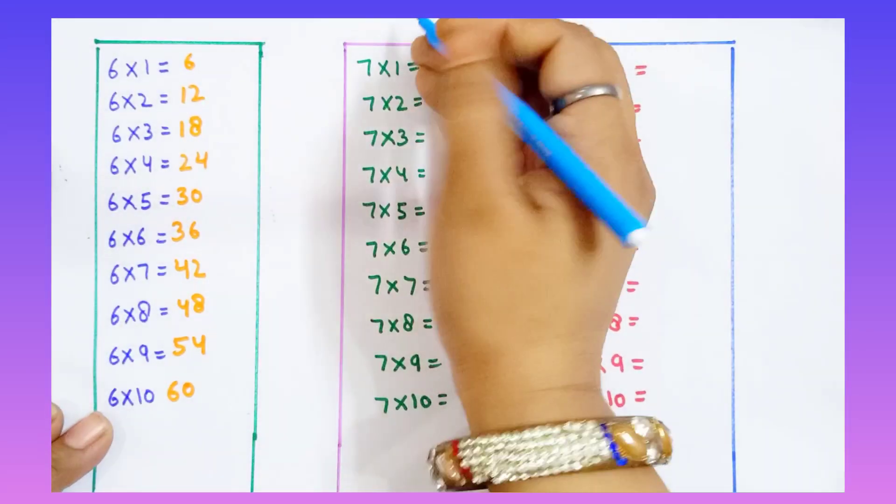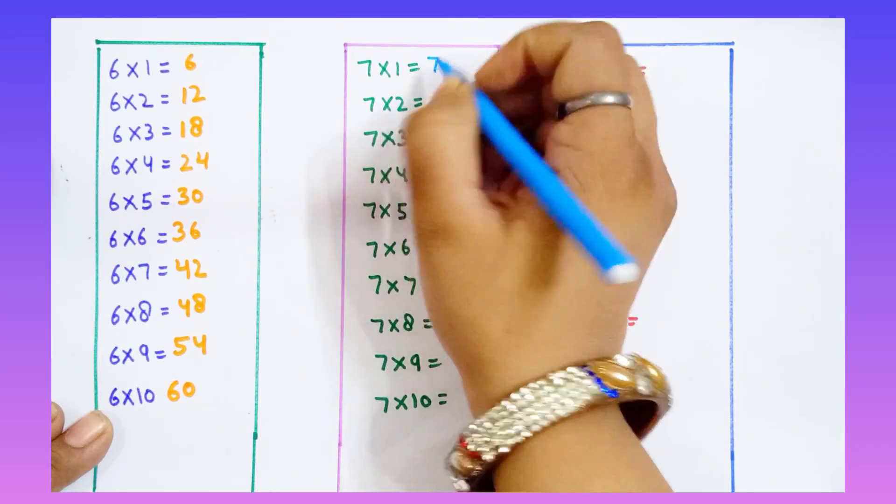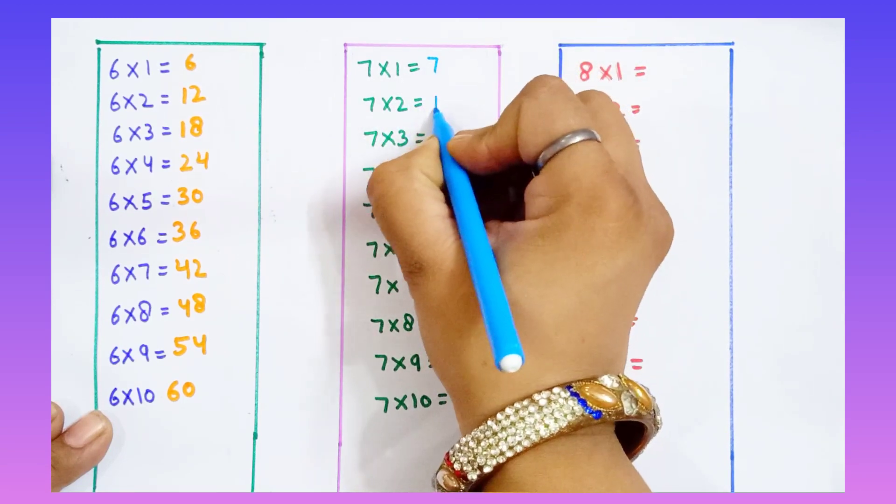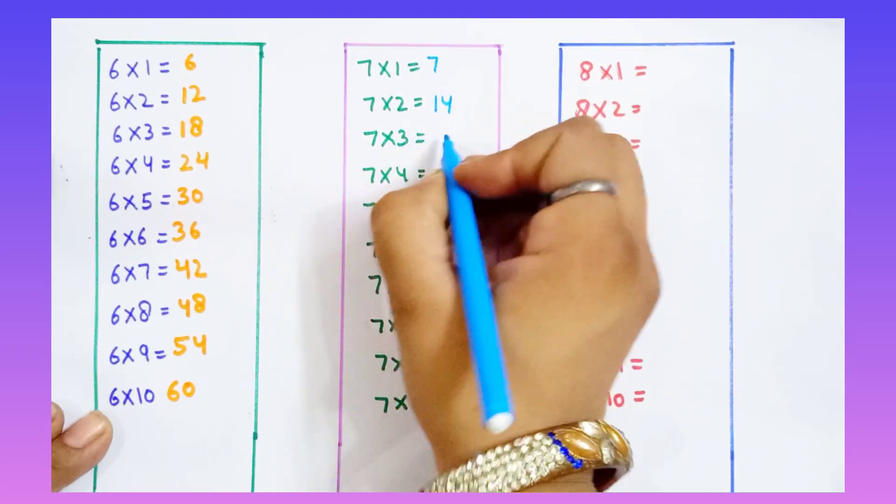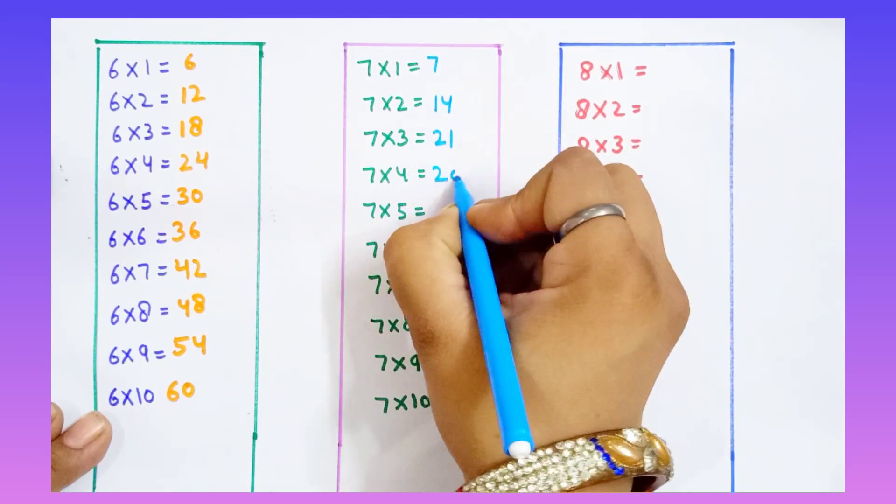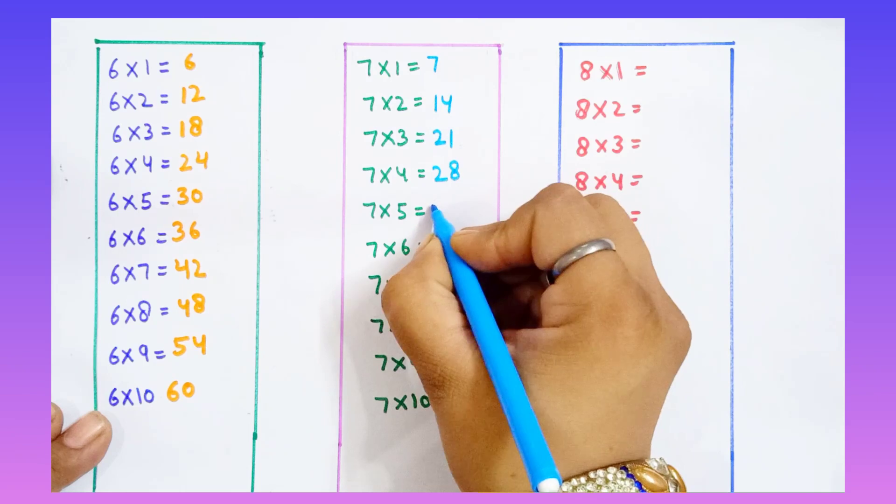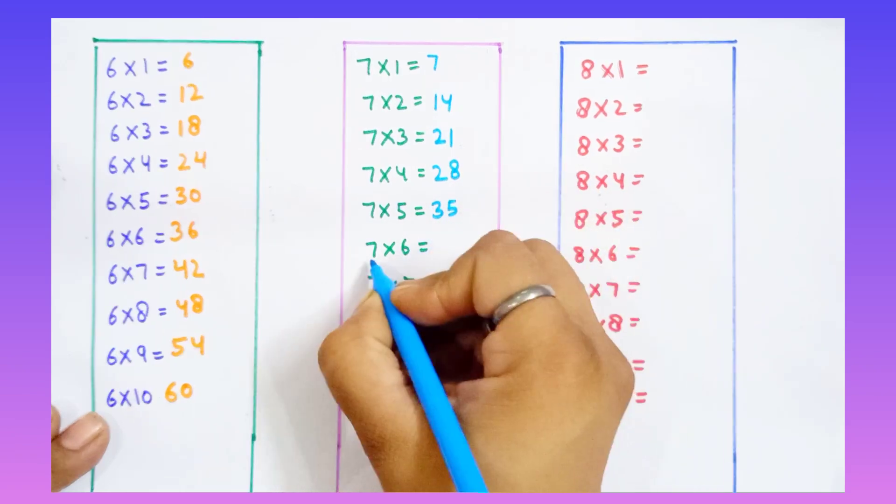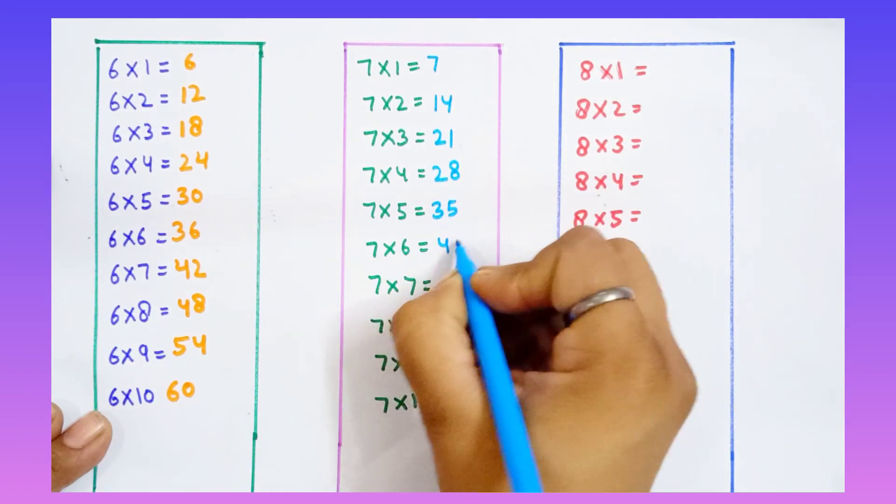7 ones are 7. 7 twos are 14. 7 threes are 21. 7 fours are 28. 7 fives are 35. 7 sixes are 42.